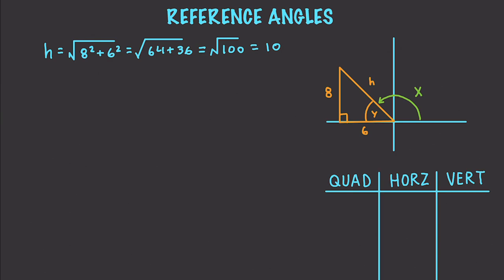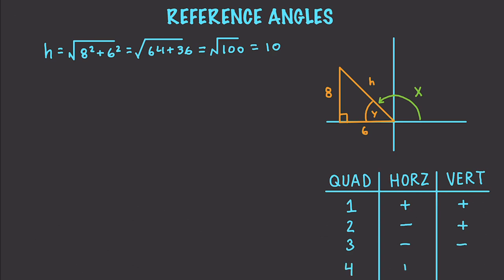Whenever you are working in different quadrants, the sign for the length is going to be positive or negative depending upon which quadrant you are in. However, the hypotenuse is always considered positive. In quad 1, both horizontal and vertical sides of our triangle are positive. In quad 2, the horizontal is negative and the vertical is positive. In quad 3, both are negative. And in quad 4, the horizontal is positive and the vertical is negative.